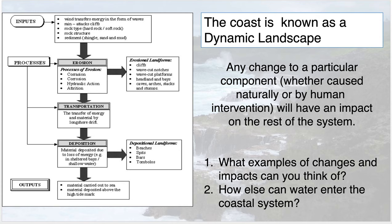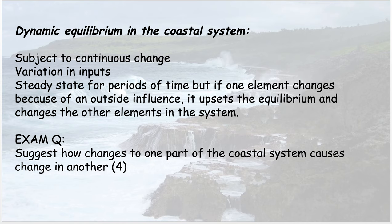Here you can see a more complicated version of the process model with inputs, processes, and outputs of the coast as a system. There are a lot more things on this diagram, so you could pause the video and add more to your list. You might also think about how else water can enter the coastal system: rain, rivers during big storms, snow, and drainage pipes from towns and villages that come out at the coast. So there are lots of ways that water acts upon the coast.